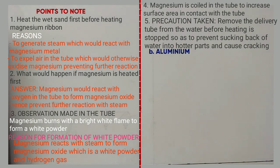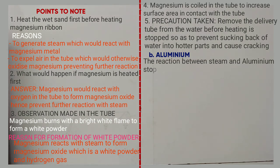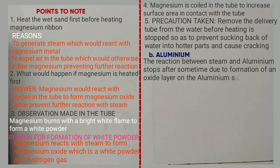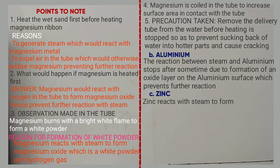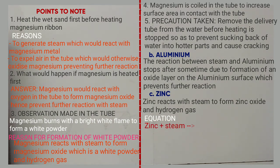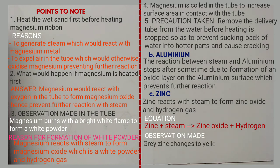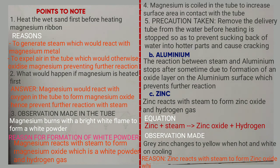The next metal is aluminium. The reaction between aluminium and steam stops after some time due to formation of an oxide layer on the aluminium surface, which prevents further reaction. Next is zinc. Zinc reacts with steam to form zinc oxide and hydrogen gas. Equation: Zn + steam → ZnO + H₂. Observation: grey zinc changes to yellow when hot and white on cooling. Reason: zinc reacts with steam to form zinc oxide, which is yellow when hot and white on cooling.